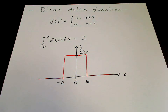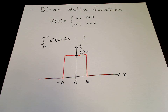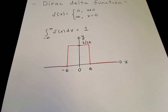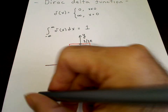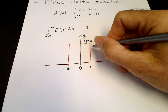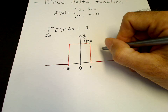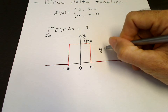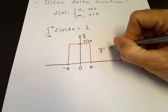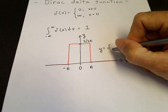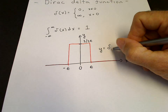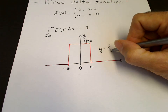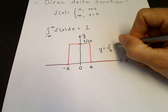So width times height is equal to 1. This representation — this function — is y equals delta of x. But it's a representation for finite epsilon, for non-zero epsilon. So we call it y equals delta_epsilon of x.